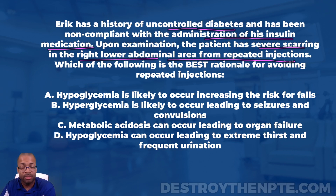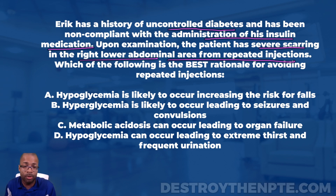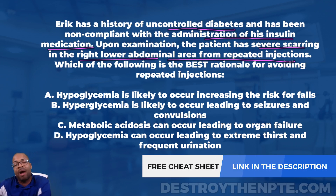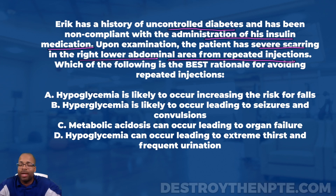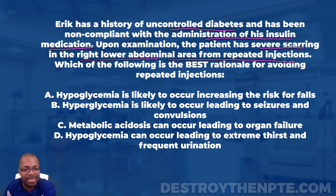The role of insulin is to help glucose get from the bloodstream into the tissues that need it for energy. If insulin isn't getting into the bloodstream quickly enough because of that scar tissue, the glucose is going to stay outside in the bloodstream — not being used like it should. When you have a ton of sugar in your bloodstream, that's called hyperglycemia. So A is not the right answer.